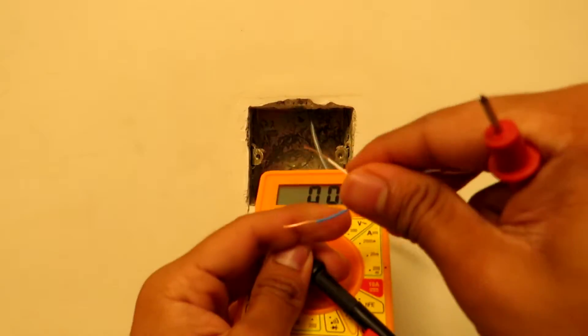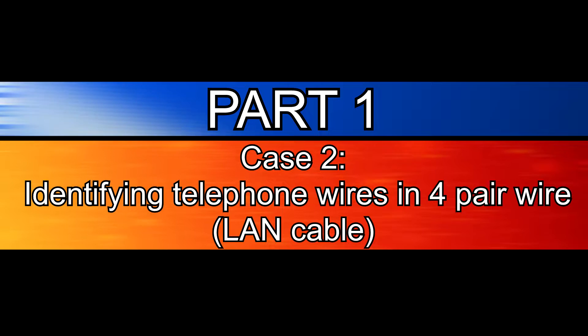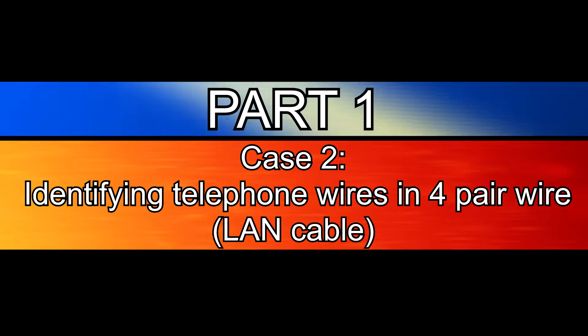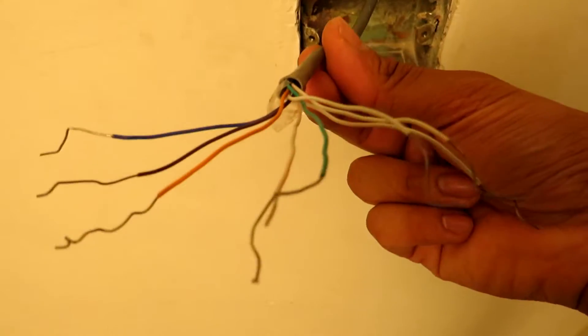Here's the second case: what if an old four pair cat5 LAN cable has come in which there is one active telephone pair? The wires may look scary at first glance but don't worry, it's very easy to find the pair.